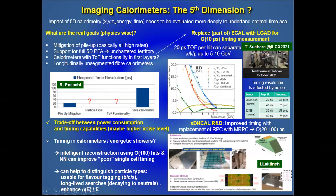With timing information, it opens the way to 5D calorimetry, where you measure the spatial position of shower energy in time. The impact of 5D calorimetry needs to be more deeply evaluated for future LC developments, as it depends on the real physics goals. Timing will help with pileup mitigation and can provide support for full 5D particle flow. The precision in timing still needs to be investigated. Calorimeters with time-of-flight functionality in the first layers can be used to improve PID. For example, replacing part of the ECAL with LGAD sensors for 10 to 20 picosecond timing measurements, as done by Japanese groups. With 20 ps timing per hit, one can separate together with dE/dx pions, kaons, and protons up to 5–10 GeV.